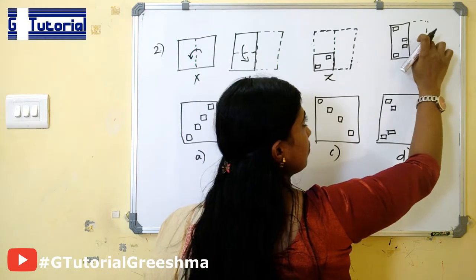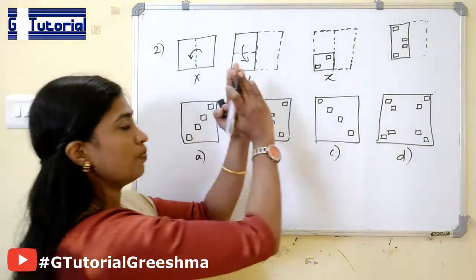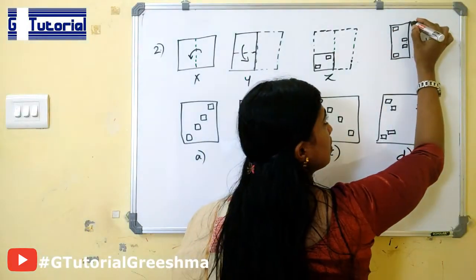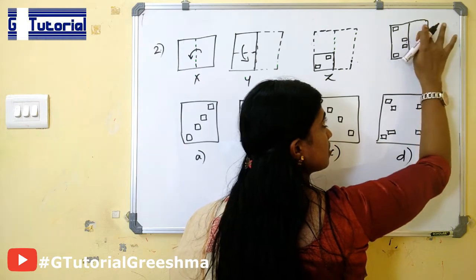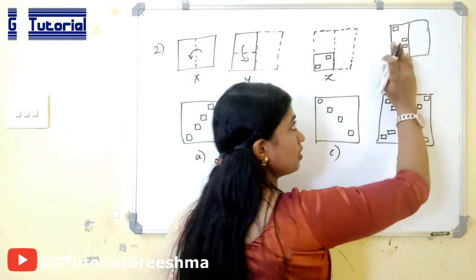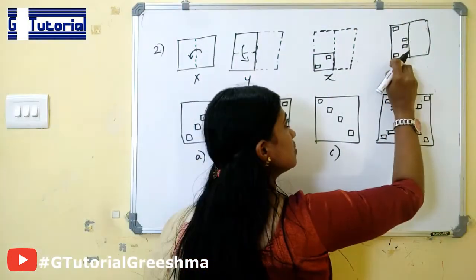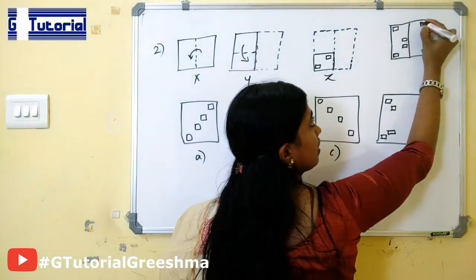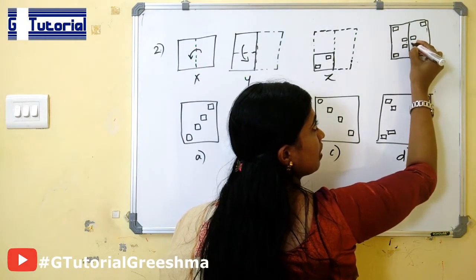Then again we are moving on to this figure. This is opened in this manner. So when it is opened, the paper will be like this. Both portions of the paper are the same. So when it is opened, this will appear here, this will appear here, this will appear close to this, and this will appear here.